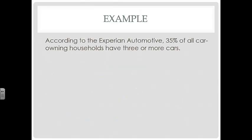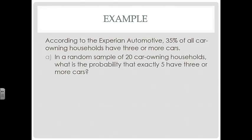According to Experian Automotive, 35% of all car-owning households have three or more cars — we'll use this example throughout the lesson. In a random sample of 20 car-owning households, what is the probability that exactly five have three or more cars? We find P(5) where N is 20, X is 5, and P is 0.35, giving us 0.1272 — about a 12.72% chance.